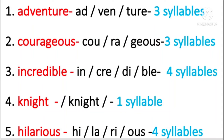Now we are moving to syllables. A syllable is a unit of pronunciation having one vowel sound, with or without surrounding consonants, forming the whole or a part of a word. For example, there are two syllables in water: wa-ter. Look at the examples children.